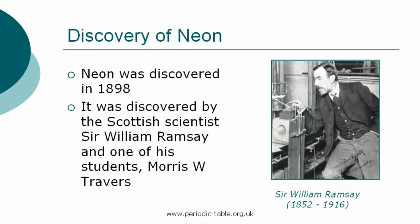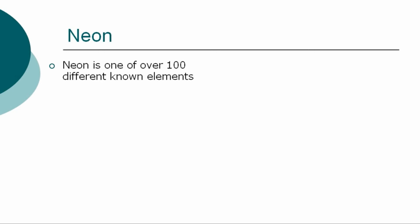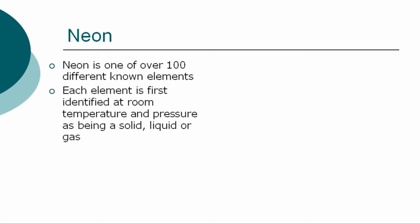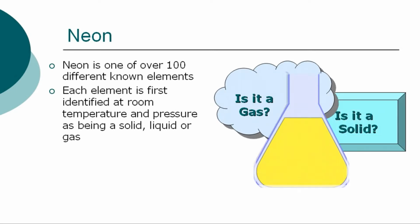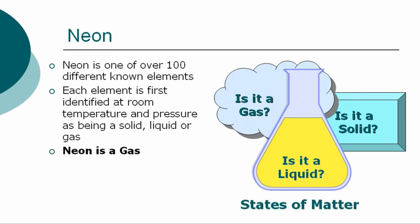Sir William Ramsey also discovered other noble gases and received the Nobel Prize in Chemistry in 1904 in recognition of his services in the discovery of the inert gaseous elements in air. The element neon is one of over 100 different chemical elements that are known to modern chemistry. Each element is first identified at room temperature and pressure as being a solid, liquid, or gas, referred to as states of matter. Neon is a gas at normal room temperature and pressure.